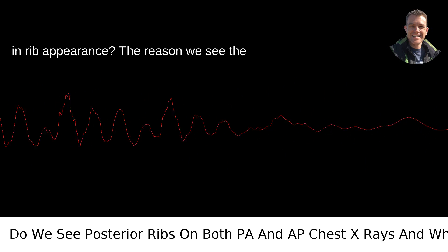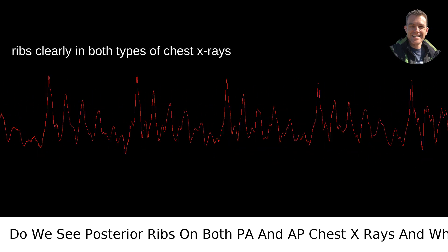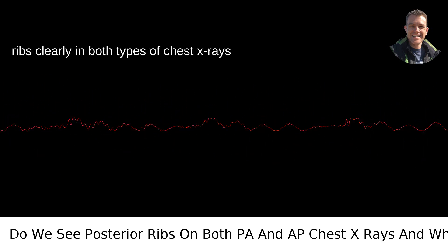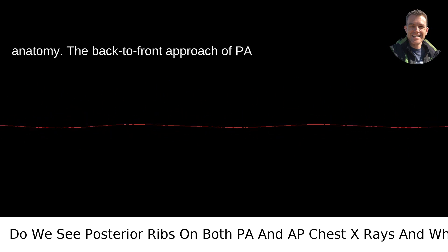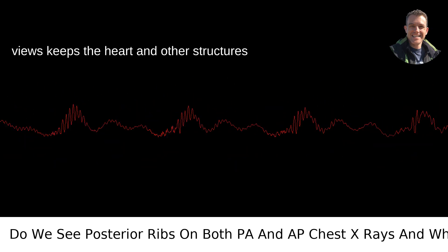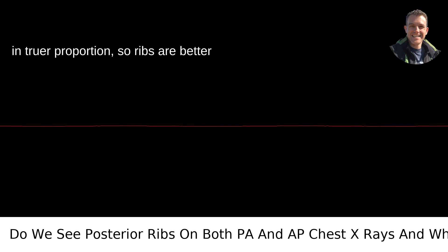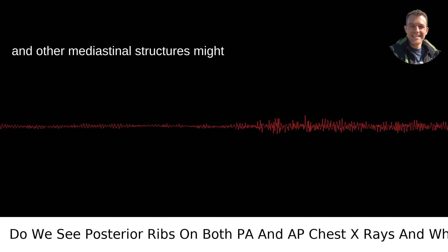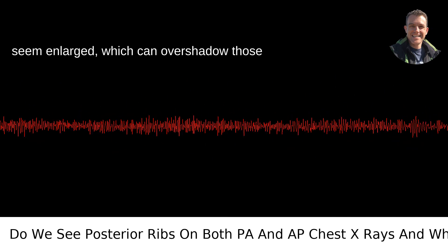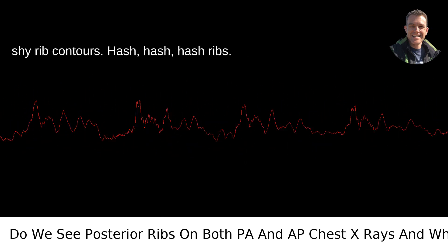But why the difference in rib appearance? The reason we see the ribs clearly in both types of chest X-rays boils down to technique and the patient's anatomy. The back-to-front approach of PA views keeps the heart and other structures in truer proportion, so ribs are better delineated. In AP views, though, the heart and other mediastinal structures might seem enlarged, which can overshadow those shy rib contours.